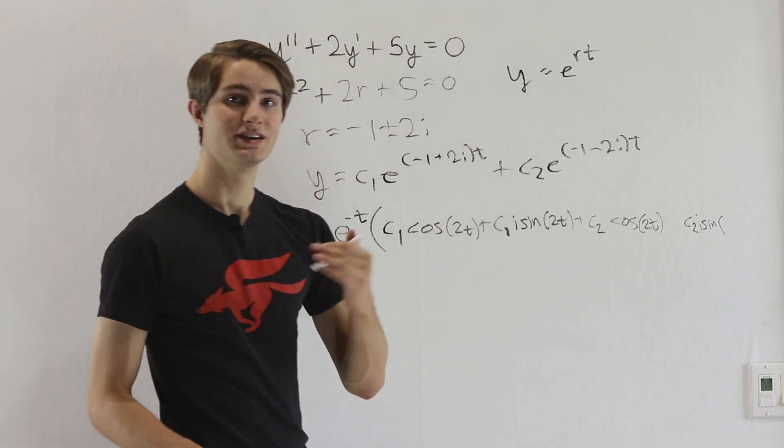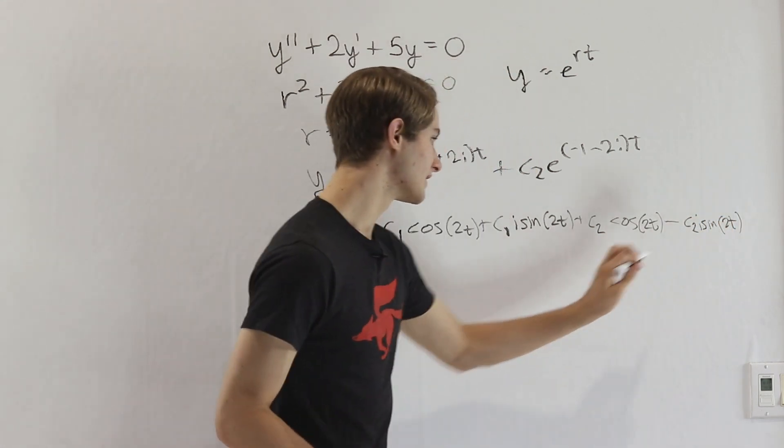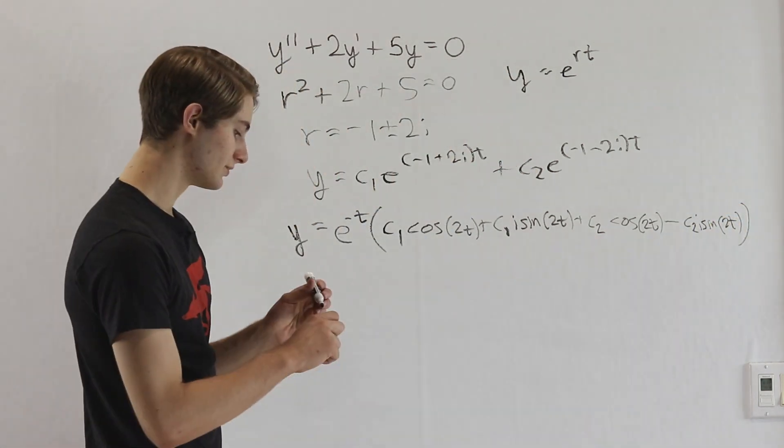Well, sine of negative 2t, sine is odd, so that's going to be a negative sine of 2t, just like that. Close the parentheses over here.